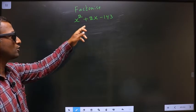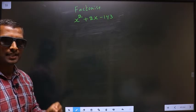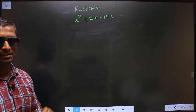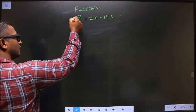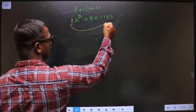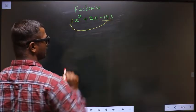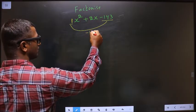Factorize x square plus 2x minus 143. To factorize any quadratic equation, Step 1: Whatever is the x square coefficient, here in this case 1, you should multiply it with the constant that is minus 143. So 1 into minus 143 is minus 143.